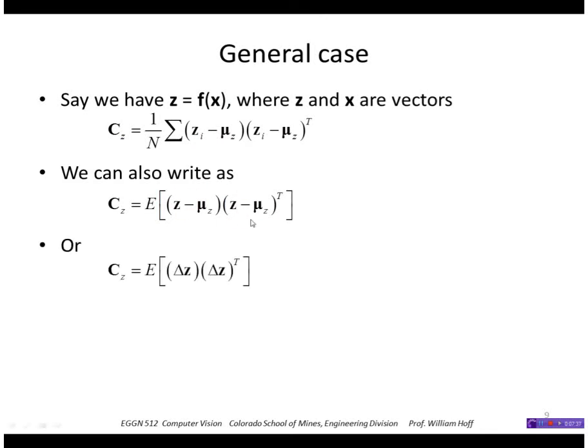Or if I interpret this as an error or deviation in z from its mean, I'll call that delta z. So that's my independent variable that I'm trying to estimate the covariance of.